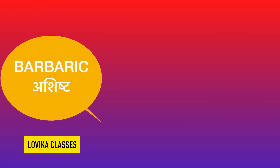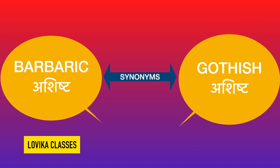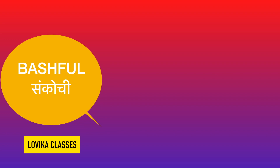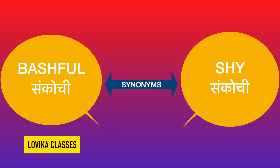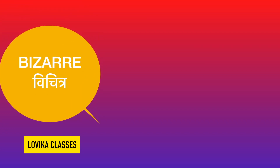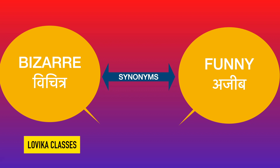Barbaric means ashisht — its synonym is brutish, also meaning ashisht. Bashful means sankochi — its synonym is shy, meaning sankochi — jisko thodi sharam hai. Bizarre means vichitra — its synonyms are funny, ajeeb. Vichitra and funny and ajeeb are all synonyms. We can use any of them to enhance our English.